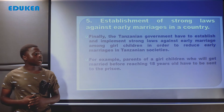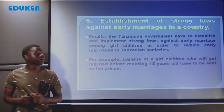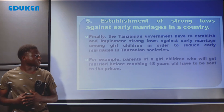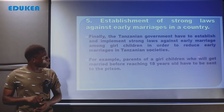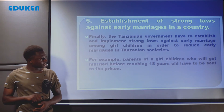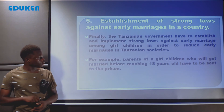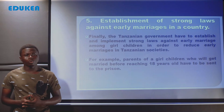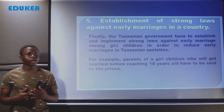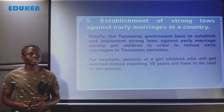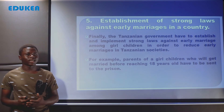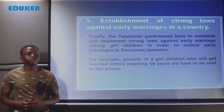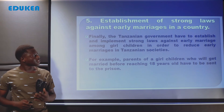Sasa tunaona kwamba serikali ya Tanzania inabidi ianzishe sheria ambazo ni strong na ziwe implemented kusolve this problem of early marriage. For example, parents of girl children who get married before reaching 18 years old have to be sent to prison — wazazi wapelekwe jela labda miezi mitatu, miezi sita, kulingana na uzito wa kosa. This is one among the laws which might be established so as to solve the problem of early marriage among Tanzanian societies.